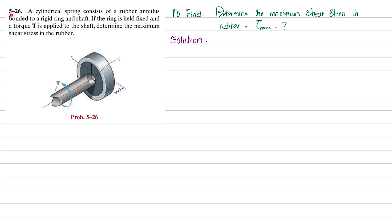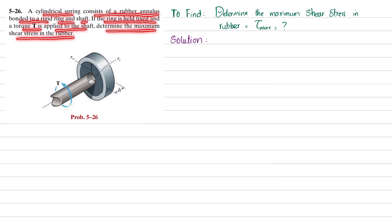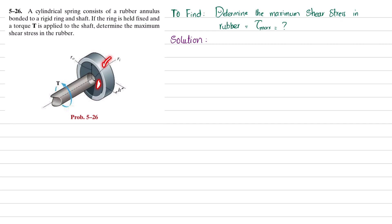Welcome back. Problem 5-26. The statement is: a cylindrical spring consists of a rubber annulus bonded to a rigid ring and shaft. If the ring is fixed and torque T is applied to the shaft, determine the maximum shear stress in the rubber. This is the rubber annulus bonded to the rigid ring and shaft, and torque T is applied to the shaft.